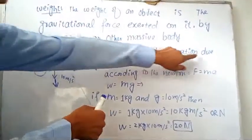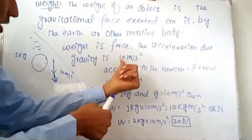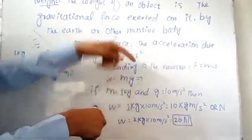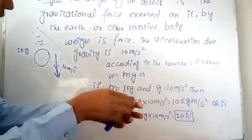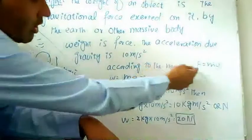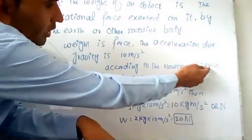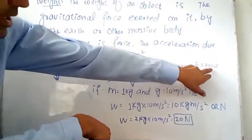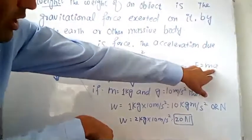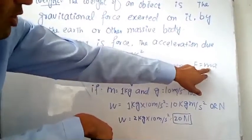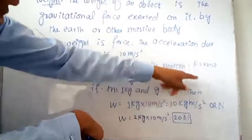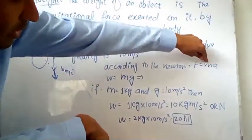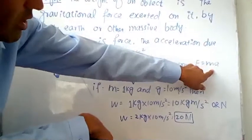The acceleration due to gravity is 10 meters per second squared. If you want to find the weight of the object, according to Newton's law F equals ma. In this law, force is directly proportional to acceleration. In this case the mass will be constant, meaning if the force on the object is increased, the acceleration is also increased.